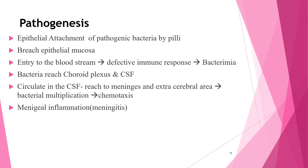Overall, the pathogenesis includes: epithelial attachment of pathogenic bacteria via pili, bridging the epithelial mucosa, entering the bloodstream, where a defective immune response causes bacteremia. Bacteria then seed the choroid plexus and CSF, and circulate in the CSF. When they reach the meninges and extracerebral areas, this causes bacterial multiplication, chemotaxis, and meningeal inflammation in the subarachnoid space.